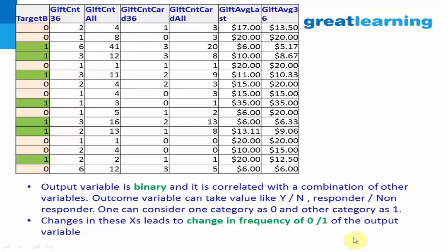The changes in the values of X will change the frequency of 0 and 1. For all values you'll have some 0s and some 1s. For example, if you gave loans to 1 million people, some became defaulters and some paid back — you can label defaulters as 1 (risky) and non-defaulters as 0 (non-risky). Another example: you gave an offer to 100,000 people and 600 accepted — those who responded are 1, otherwise 0. This is a scenario requiring logistic regression, where the dependent variable is categorical, not numeric.